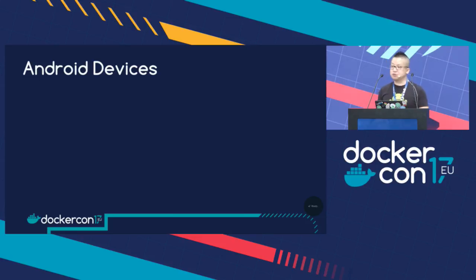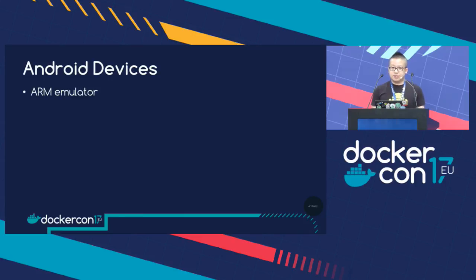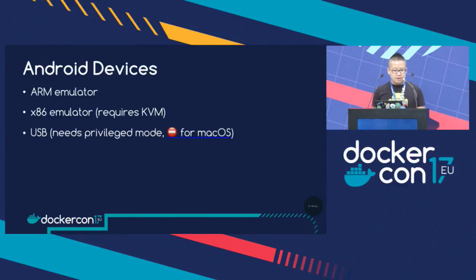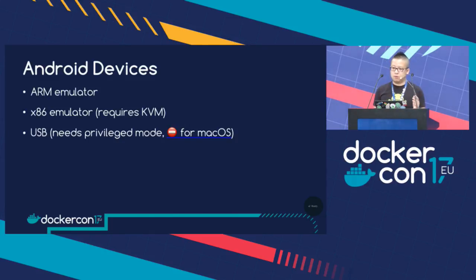Let's talk about Android device options for UI testing. The first option is the ARM emulator — available everywhere but slow. The second is the x86 emulator — lightning fast, but it requires KVM, meaning you can only deploy it on a hardware Linux machine. The third is USB — a physical approach that needs privileged mode in Docker, which is not a big deal since it's only deployed inside your corporation for development purposes.